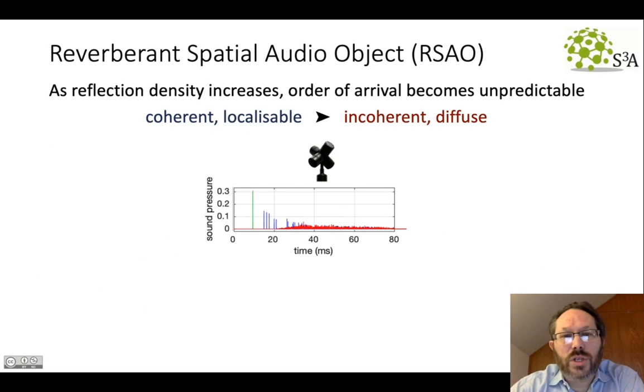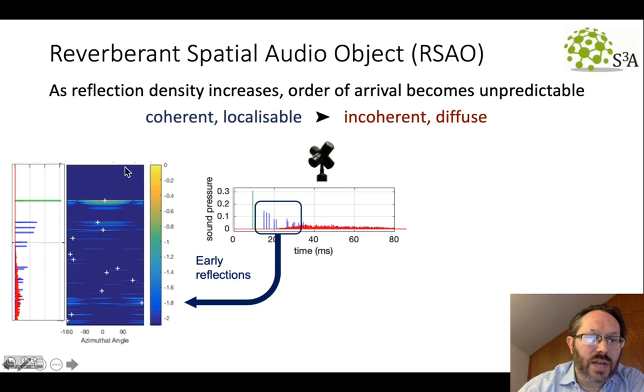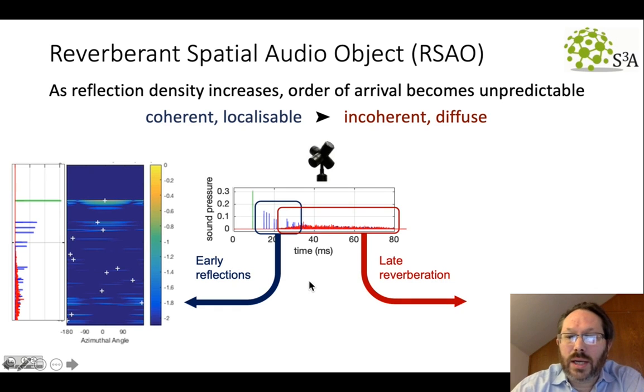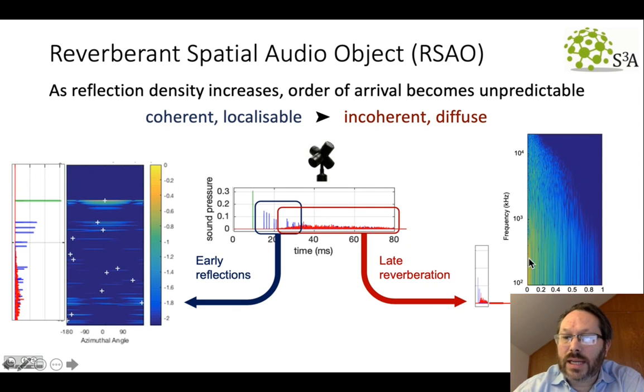So we use this reverberant spatial audio object representation that splits the impulse response to the early part, which is considered coherent and localizable, and encodes that information in terms of level and time and direction of arrival information, primarily. And then the late part, where we have an analysis in frequency bands of how the energy decays over time.